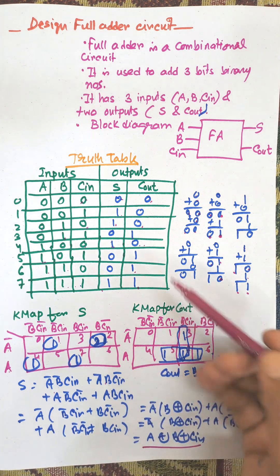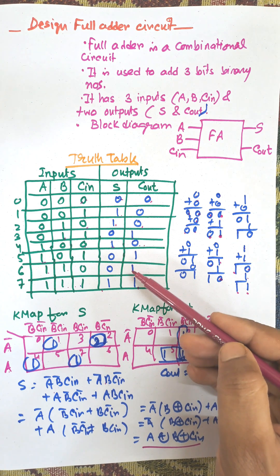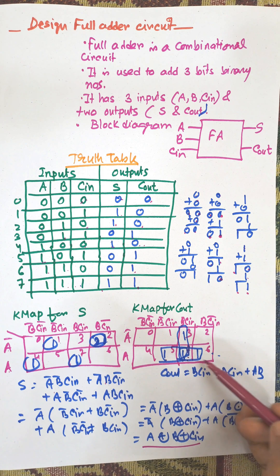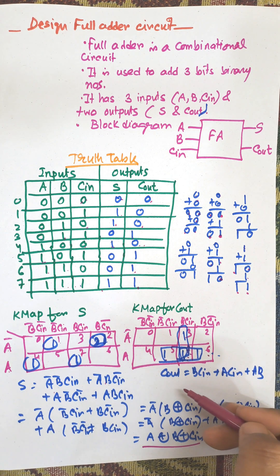Now putting the values of carry, that is 3, 4, 5, 6, 7. Taking groups: 3, 5 as a group, 4, 7 as a group, and 5, 6, 7 as a group. And this is the circuit for C out.